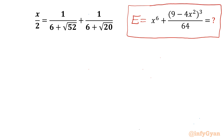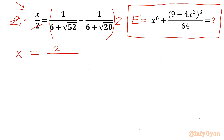The given equation is x over 2, so let us multiply both sides by 2 first. We can cancel the 2s, and it becomes x equal to 2 over (6 plus √52) plus 2 over (6 plus √20).